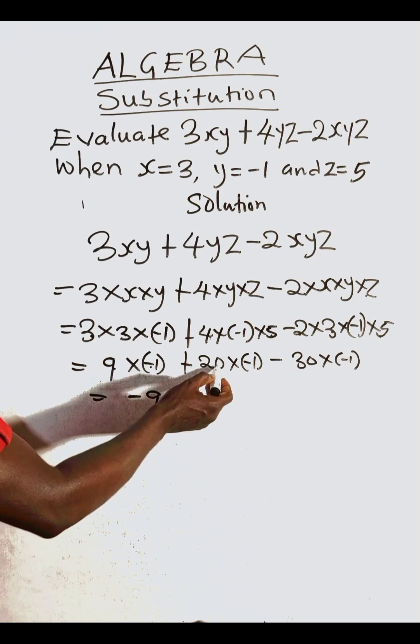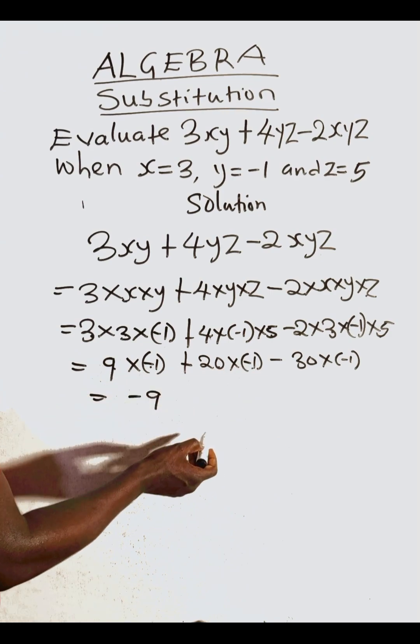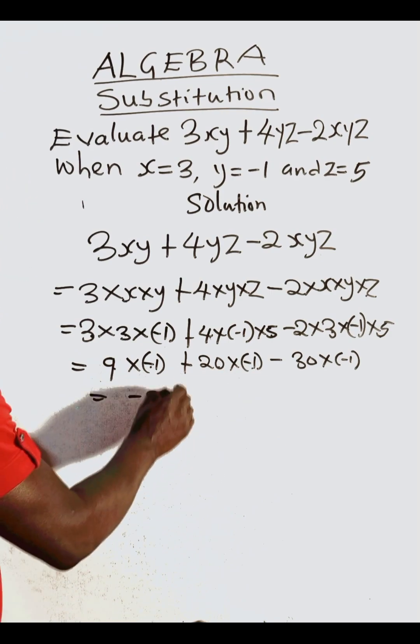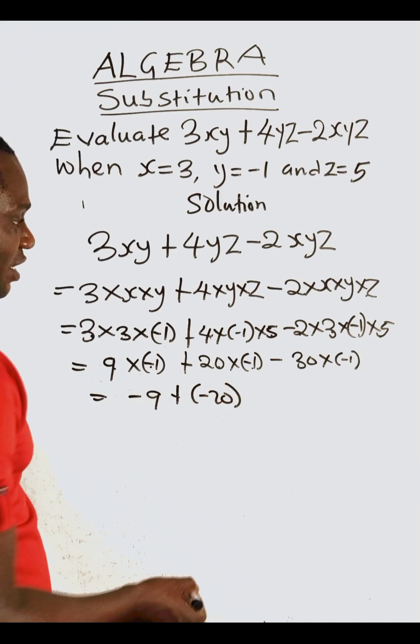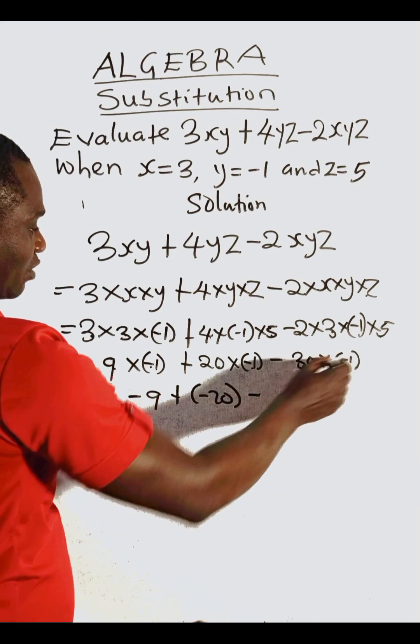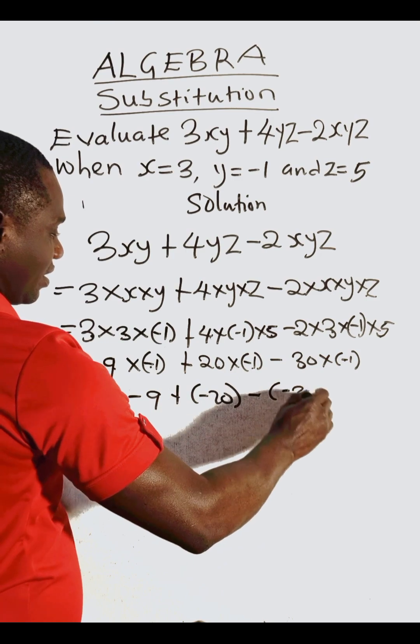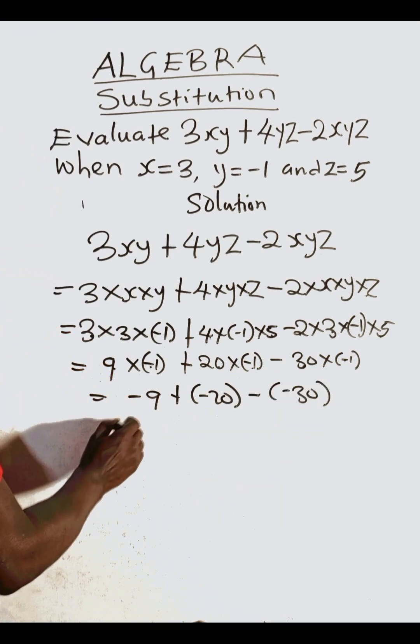Of course, nine times minus one is minus nine, twenty times minus one is minus twenty. And also thirty times minus one is minus thirty. Let's quickly open the brackets.